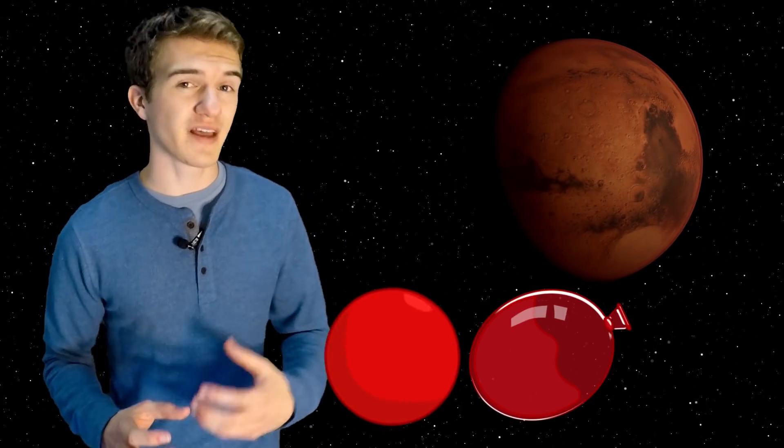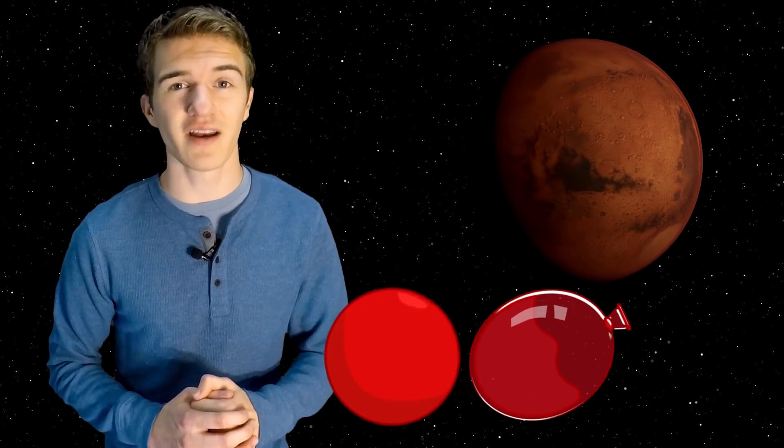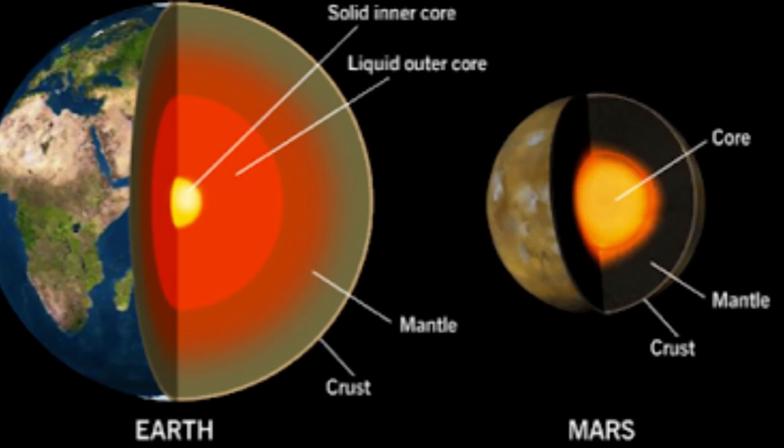Therefore, determining whether something is a liquid or a solid on the inside can determine how much it may wobble in its orbit, in terms of a planet. So ultimately, by detecting how much it's wobbling, we can see how much of what's going on beneath the surface is actual liquid.